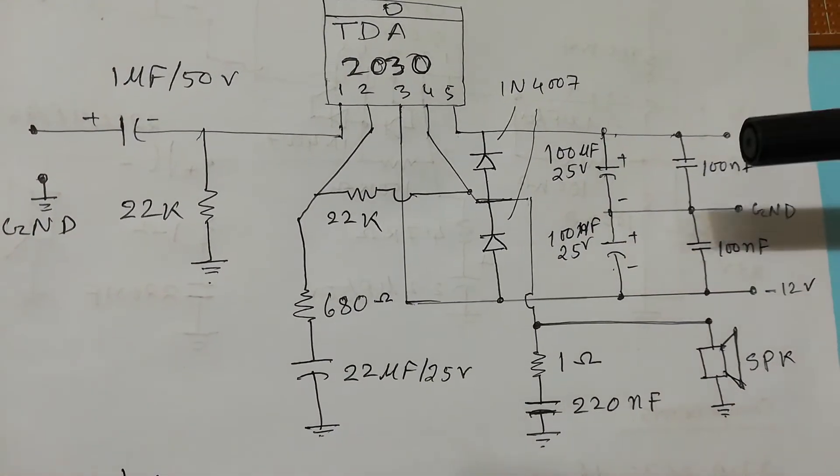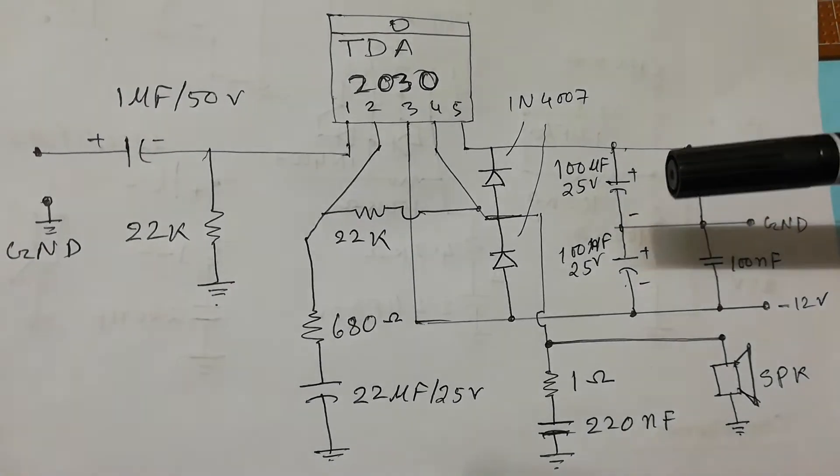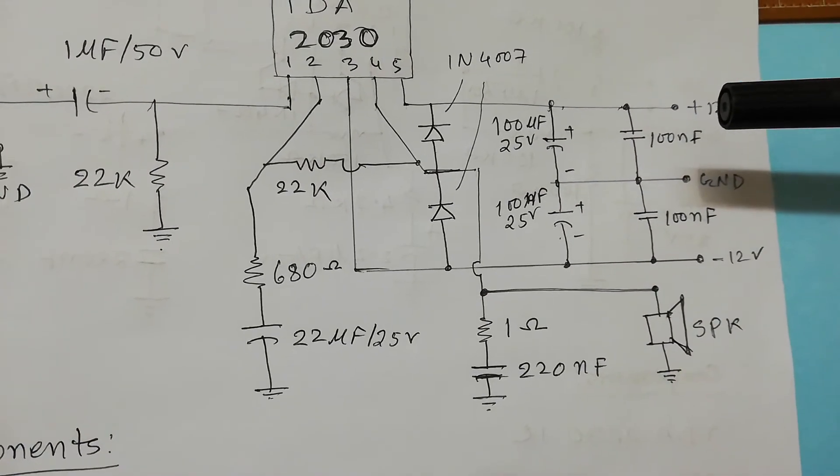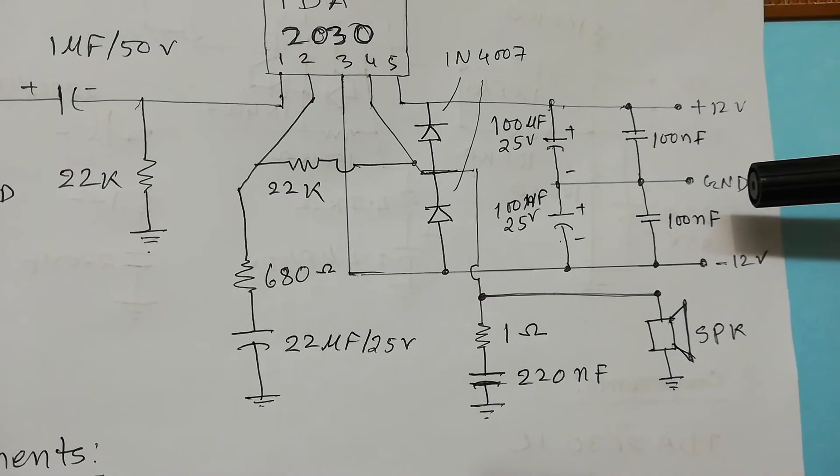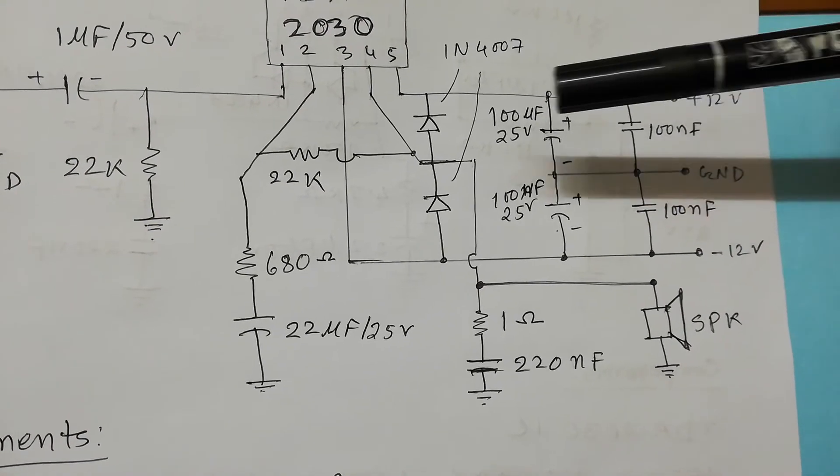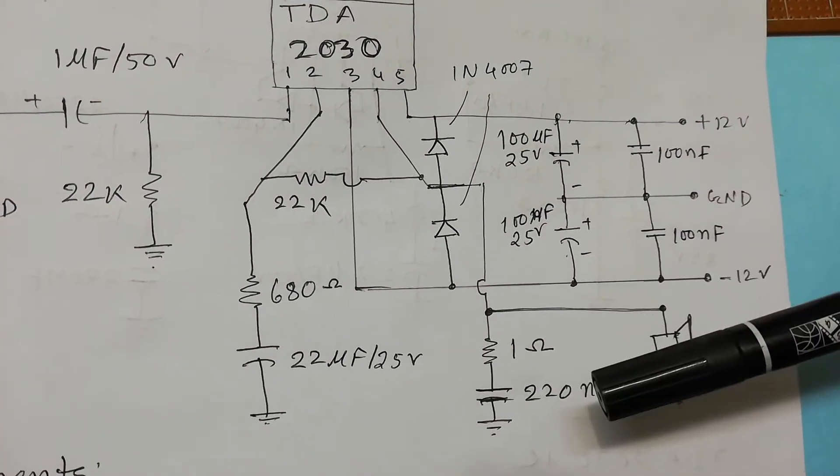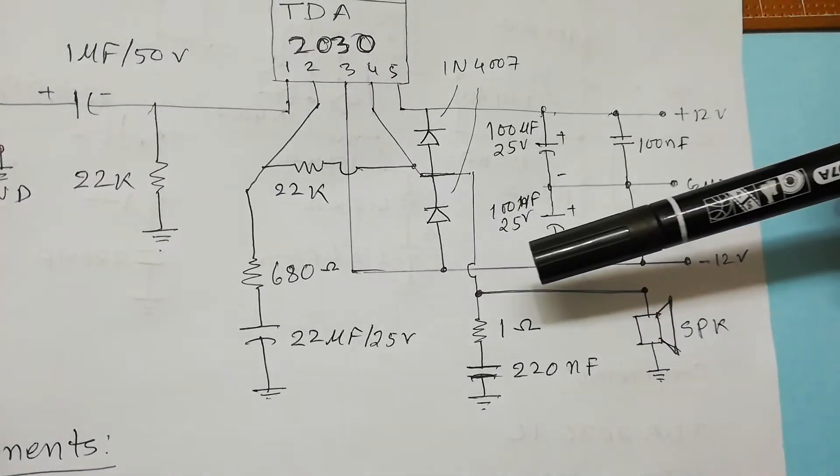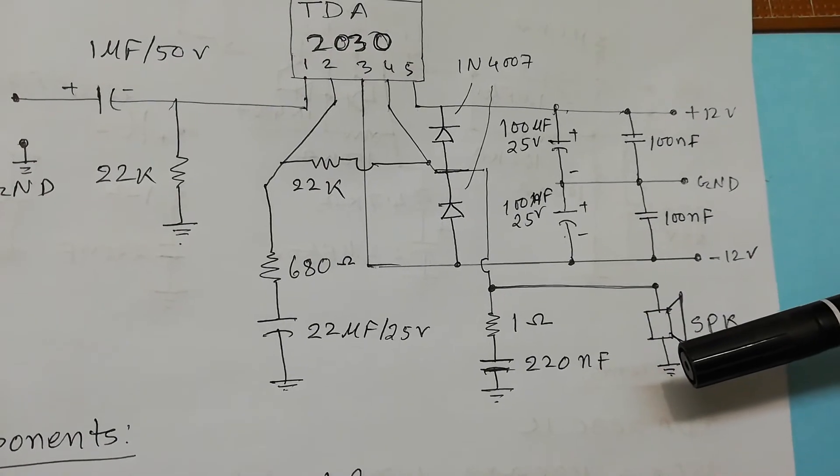And in the power section, I used 100 microfarad 25V capacitor with 100 nanofarad filter capacitor here, from positive 12 to ground and negative 12 to ground. And from pin number one, I connected one ohm resistor through 220 nanofarad capacitor. And from pin number one, I have connected the speaker and other end of the speaker connected to ground.